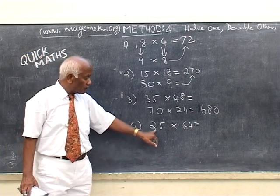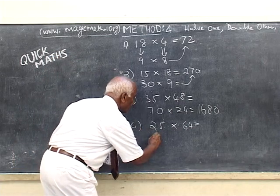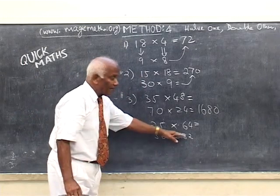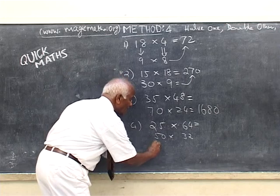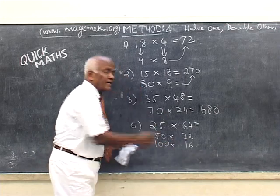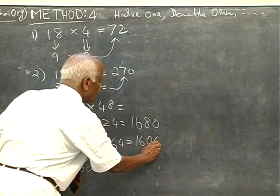But now look at this. 25 can be doubled. It becomes 50. This is half 32. But either you can multiply like this or double 50 is a very good number. So it becomes 100. You do not even write it. So this becomes 16. So 1600 is the answer. It is pretty fast.